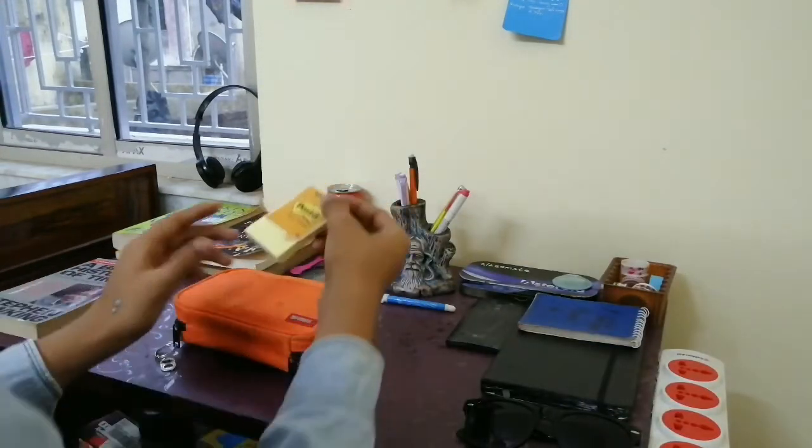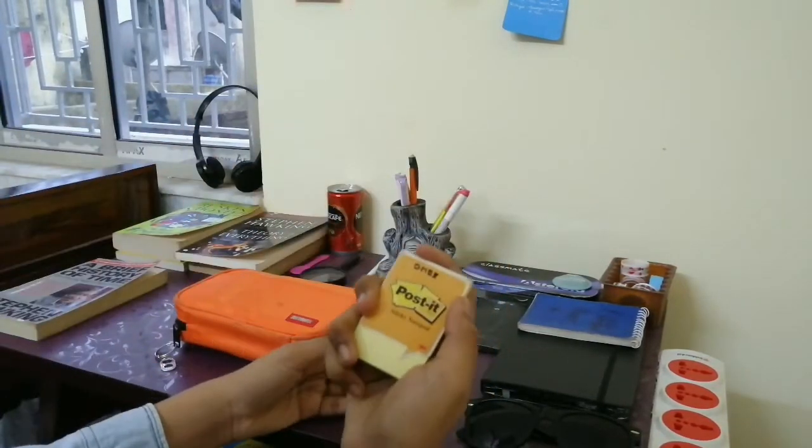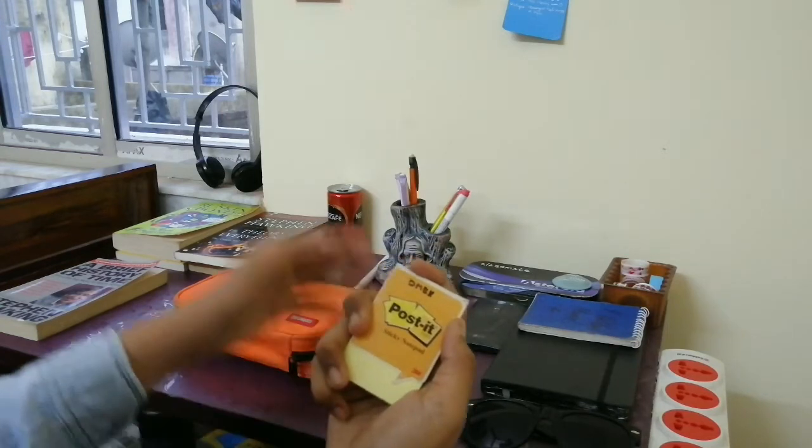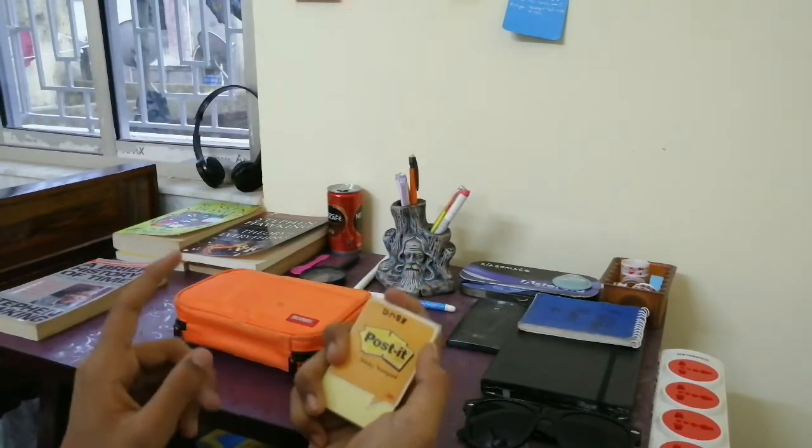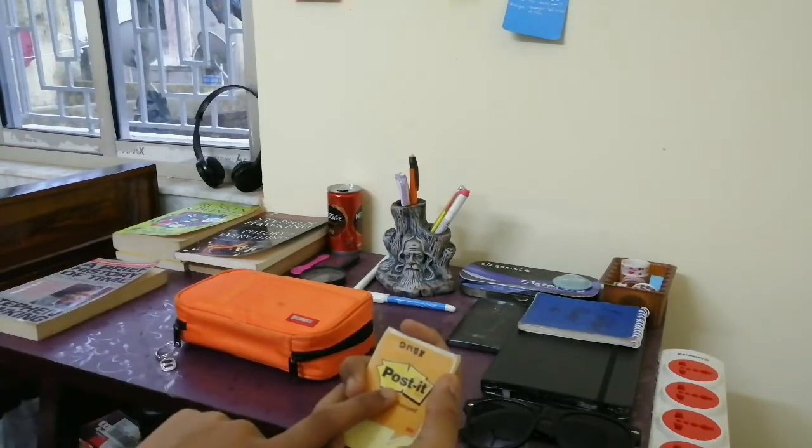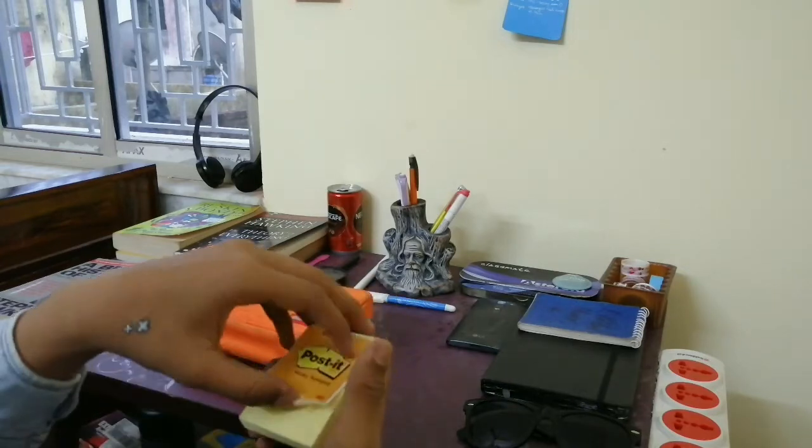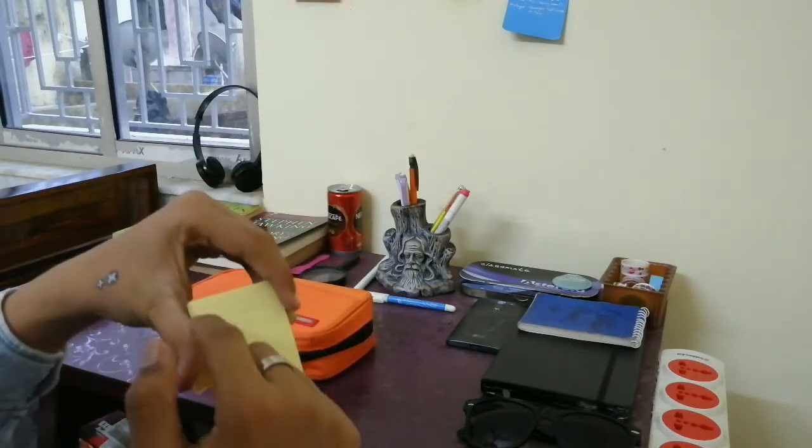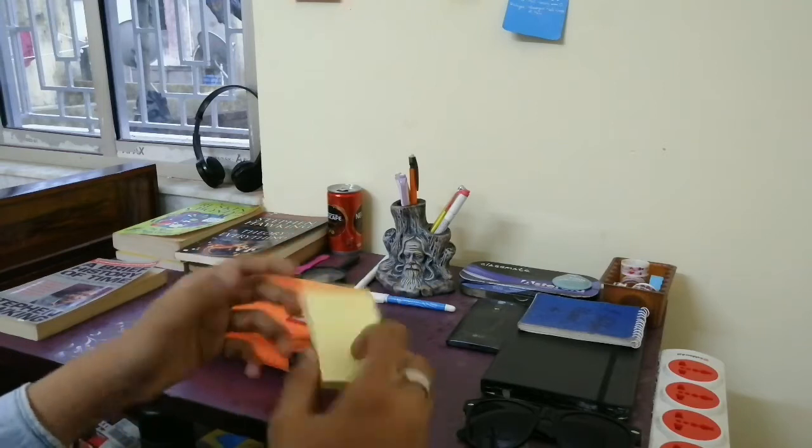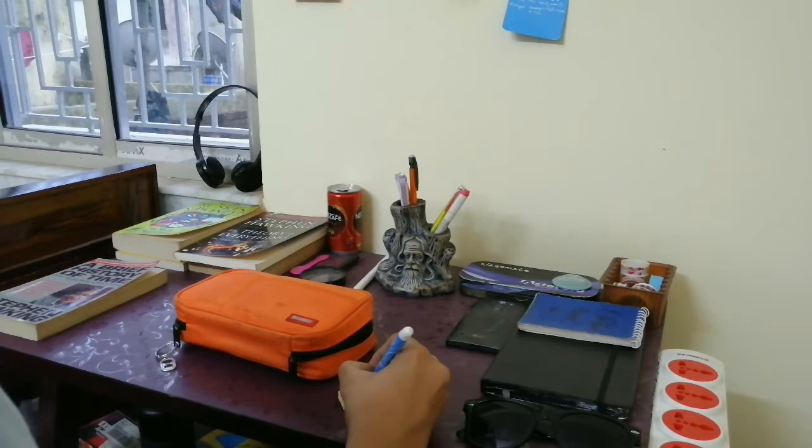The next thing is Post-it notes. They are very essential. I don't want to touch my device for noting down all the notifications of daily work, so that's why I use Post-it notes. They're very useful for daily noting down of the work. I make a box around it.